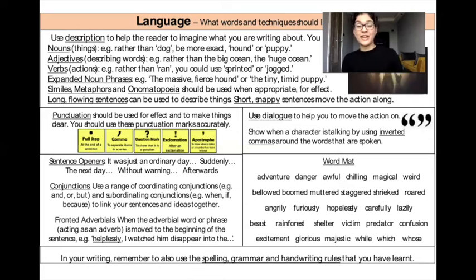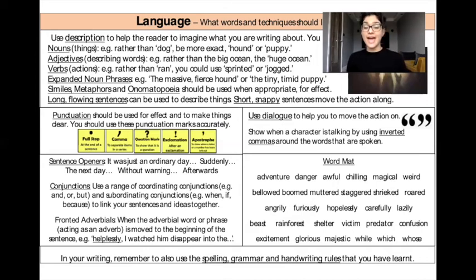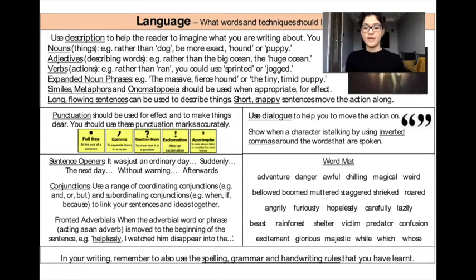Use words from the word maps. These include: adventure, danger, awful, chilling, magical, weird, bellowed, boomed, muttered, staggered, shrieked, roared — and our adverbs: angrily, furiously, hopelessly, carefully, lazily. Also: beast, rainforest, shelter, victim, predator, confusion, excitement, glorious, majestic, while, which, and whose.